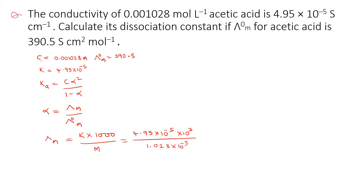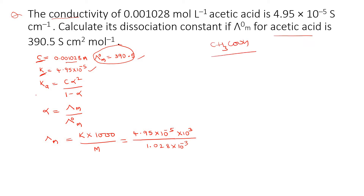In this problem, the given concentration is provided. Specific conductance or conductivity is given: 4.95 × 10⁻⁵. Similarly, molar conductance at infinite dilution is also given. This is for acetic acid, CH₃COOH, which is a weak acid, so we are using Kohlrausch's law.